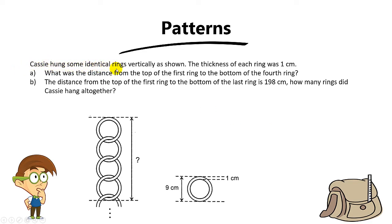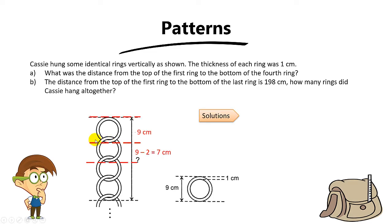KC hung some identical rings vertically as shown. Here are some identical rings and the thickness of each ring was 1cm. For part A, they want the total distance from the top of the first ring to the bottom of the fourth ring. The rings overlap here. The overlap part is 1cm plus 1cm — because the thickness is 1cm and when they overlap, they overlap at two parts, so the overlap region is actually 2cm.